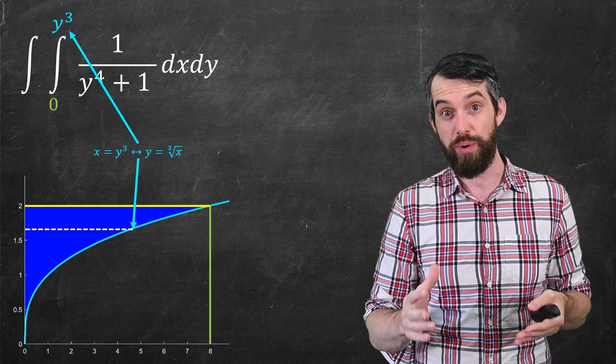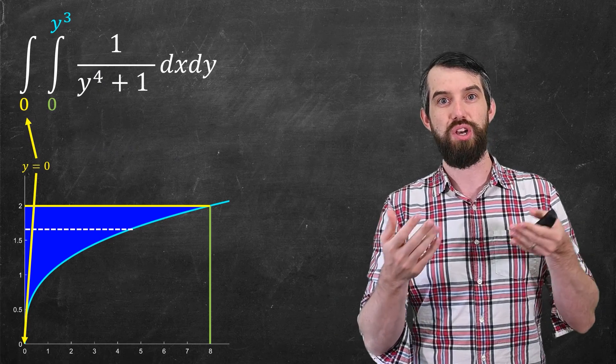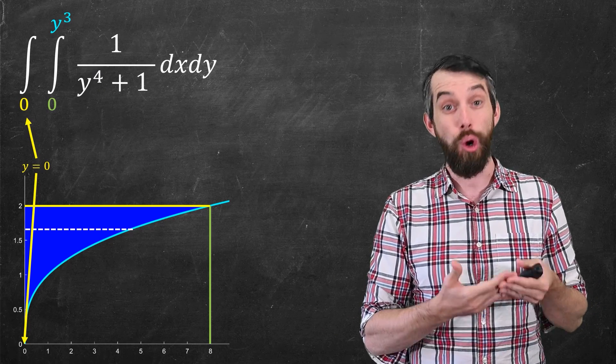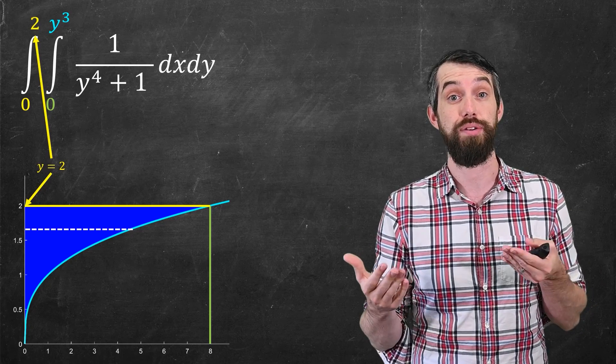All right, so that was the inner integral with respect to x. Now let's do the outer integral with respect to y. At the bottom, it's just going to start here at zero. That's the lowest possible spot in this region, and the highest spot in the region is going to be two, and so I just put in zero and two.